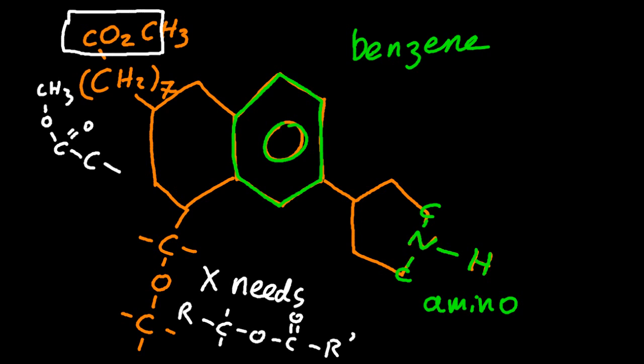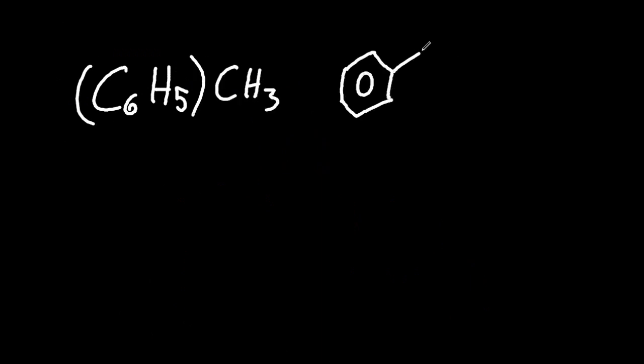So let's look at the condensed structural formula. This is as nasty as it would get. So this is actually methyl benzene. You can see that C6H5 is kind of indicative of the benzene ring.